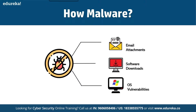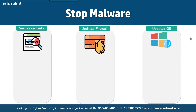Malware can compromise your system in various ways. First, through email attachments containing malicious hyperlinks. Second, through software downloads — a file that looks normal but contains a virus. Third, through OS vulnerabilities — if you have not patched your system or installed application updates for a long time, attackers can exploit those vulnerabilities to compromise your system.